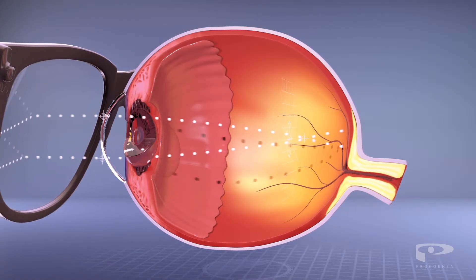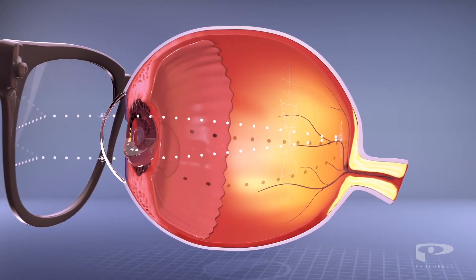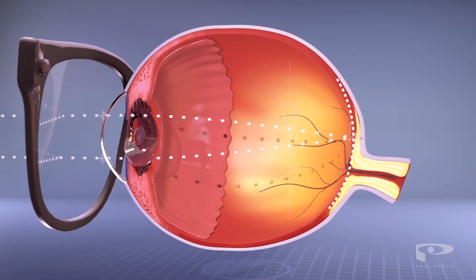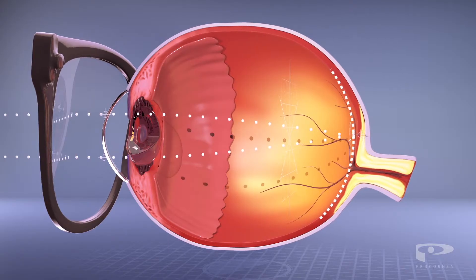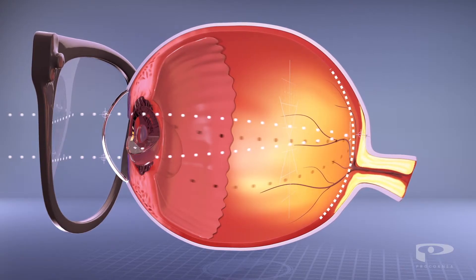Glasses and regular contact lenses can correct myopia by refocusing light back onto the retina. However, glasses can be inconvenient and regular contact lenses can often lead to irritated eyes.